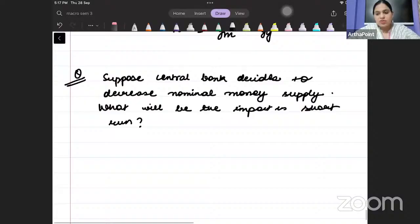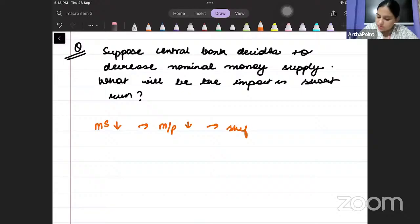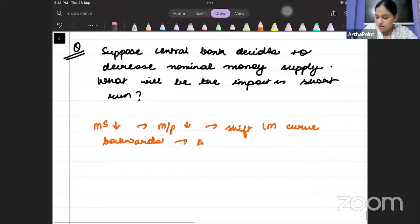Now listen to me very carefully. When I decrease money supply, automatically m by p also decreases. When m by p decreases, what will happen? It is going to shift the LM curve backwards. And whenever the LM curve shifts, what will happen to the aggregate demand curve? The AD curve will shift backward.